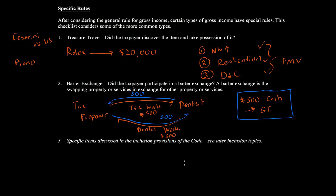There are also specific items in the Internal Revenue Code where, even though our three-part test is clearly met, there are special rules on how to calculate the amount. These items include alimony under section 71, annuities under section 72, prizes and awards under section 74, and other various provisions.